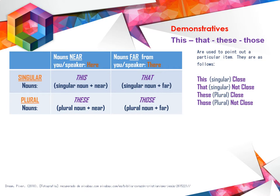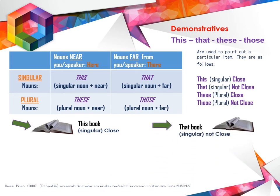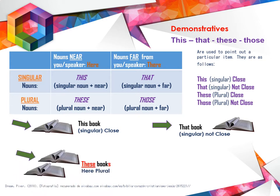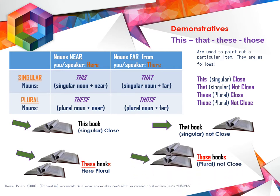La diferencia entre estos es que unos están cerca y otros son para indicar que los objetos están lejos. En singular, para los objetos que están cerca tenemos this, y los objetos que están alejados son that. Por ejemplo, this book y that book. En plural tendríamos these books cuando está cerca, o those books cuando están lejos.